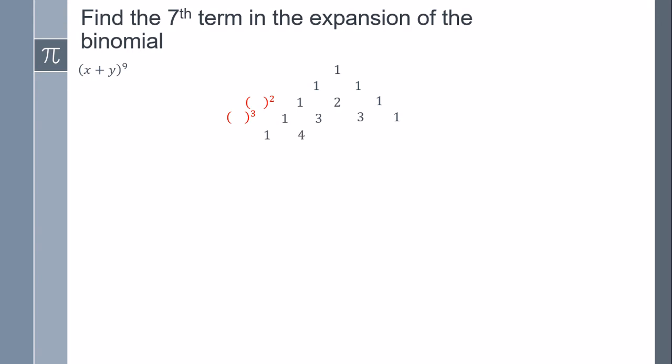The fourth is 3 plus 1, 4, 3 plus 3, 6, 3 plus 1, 4. This is the fourth. The fifth is 1 plus 1, 5, 6 plus 4, 10, 6 plus 4, 10, and 4 plus 1, 5. This is the fifth.